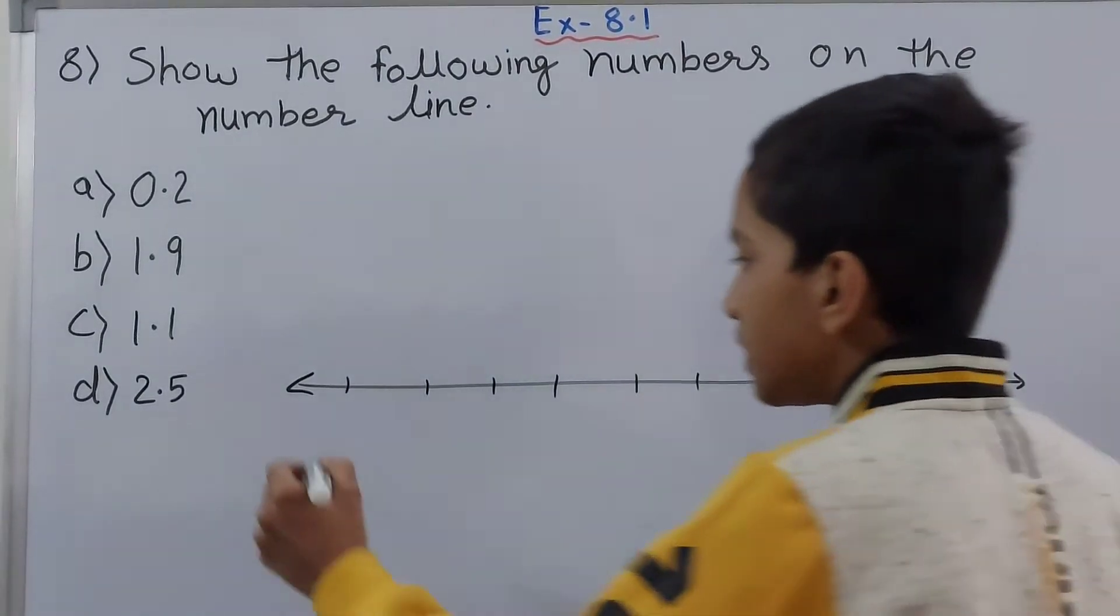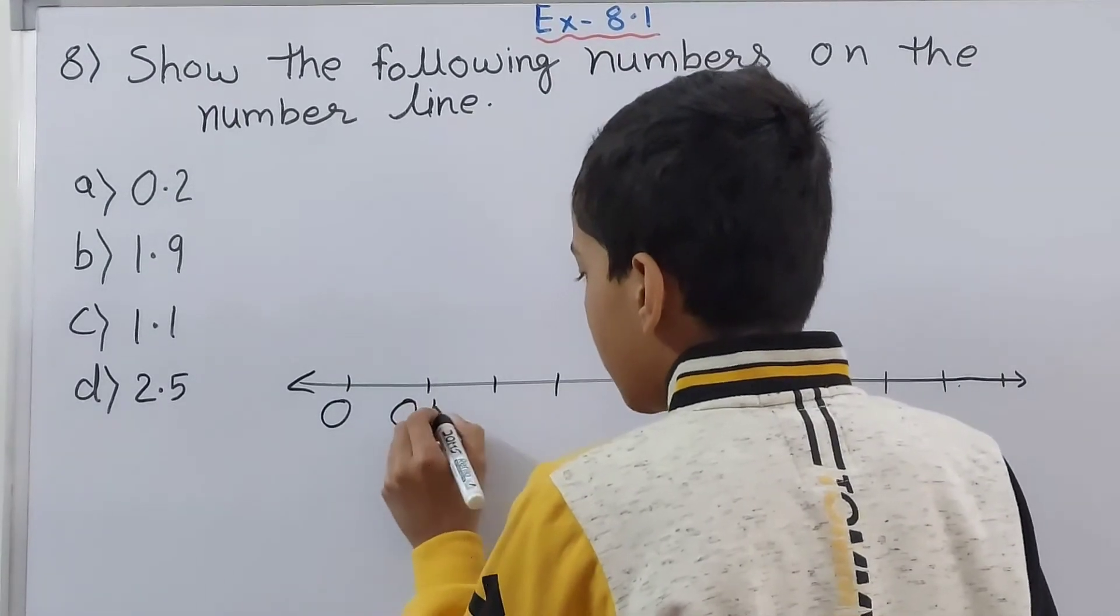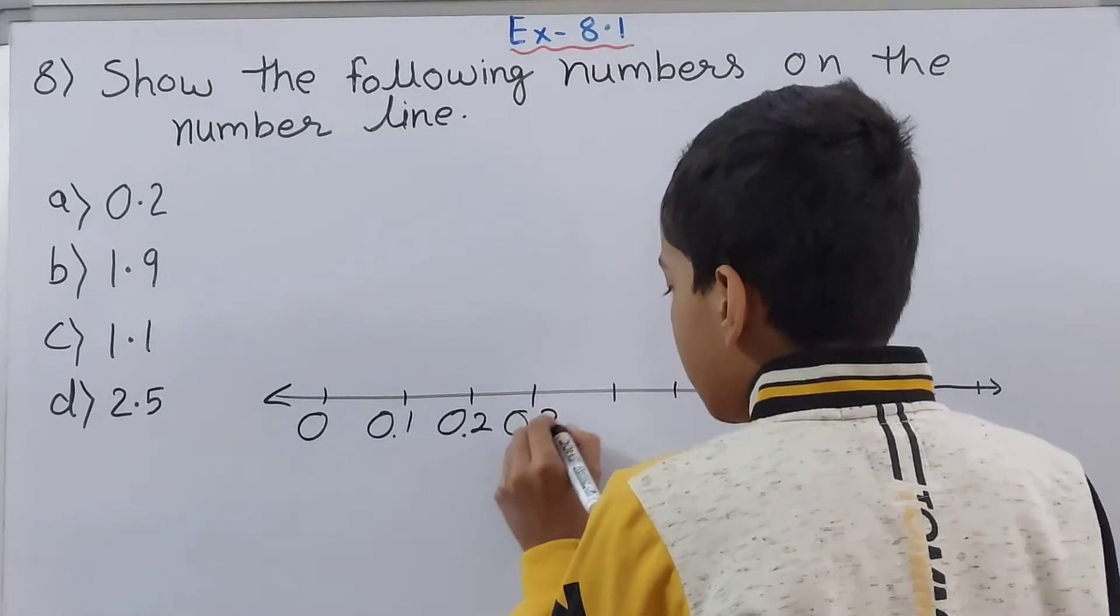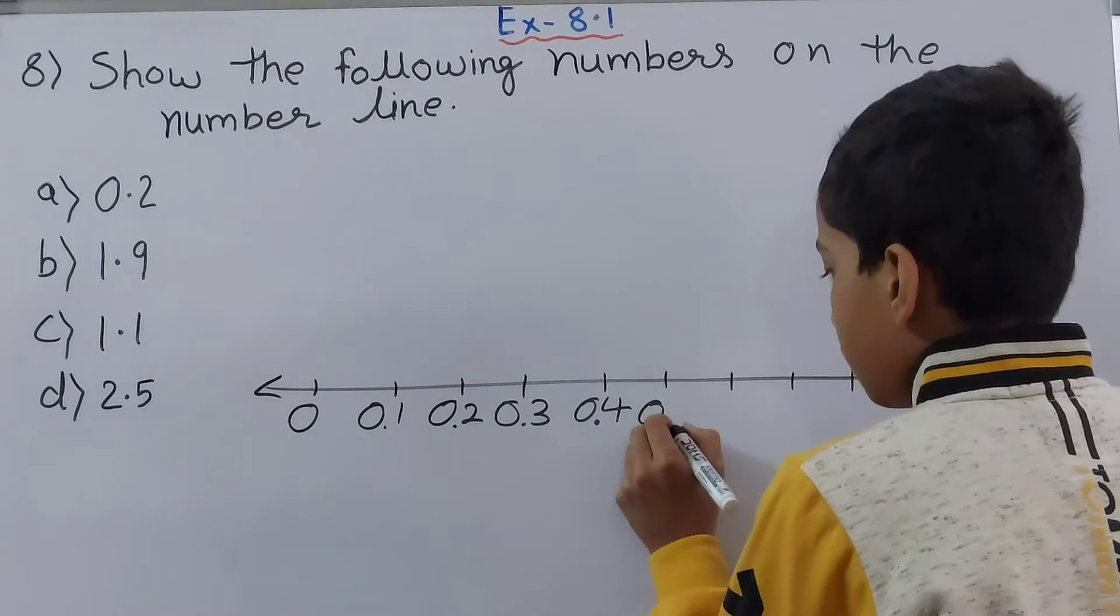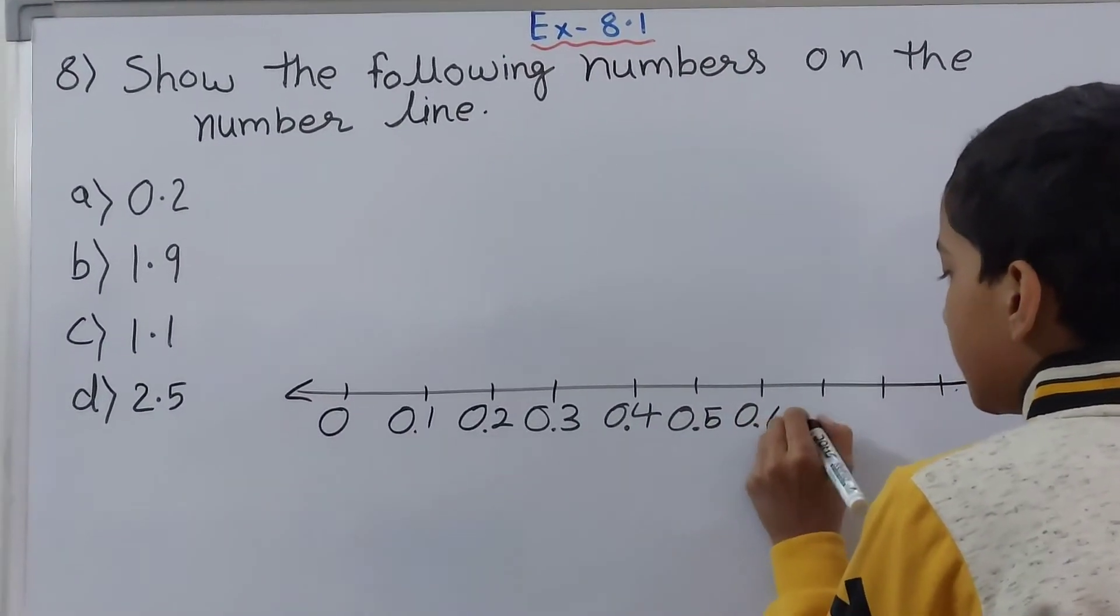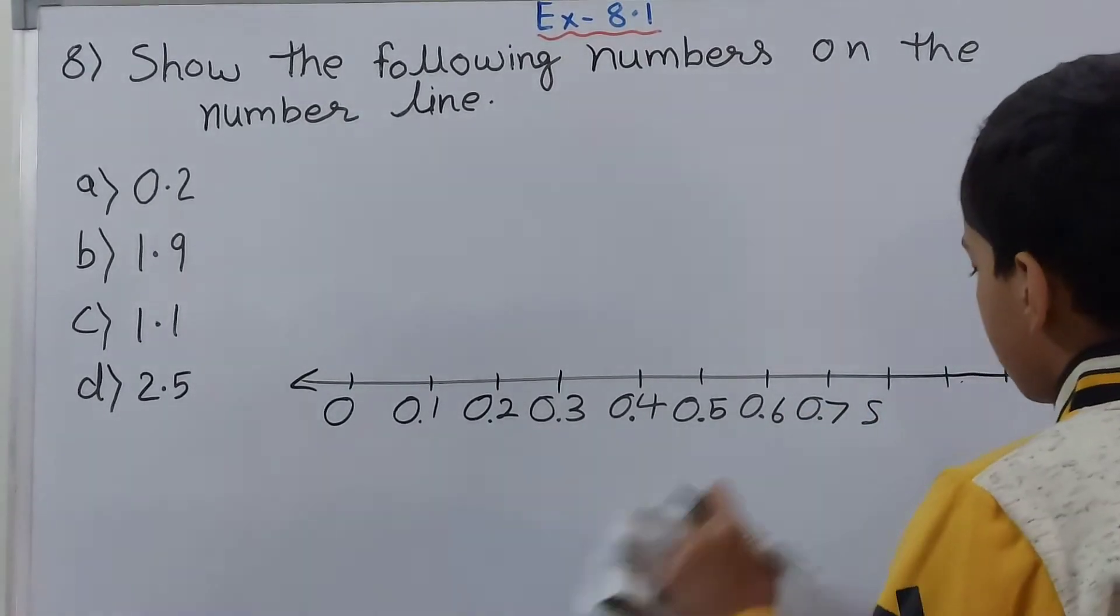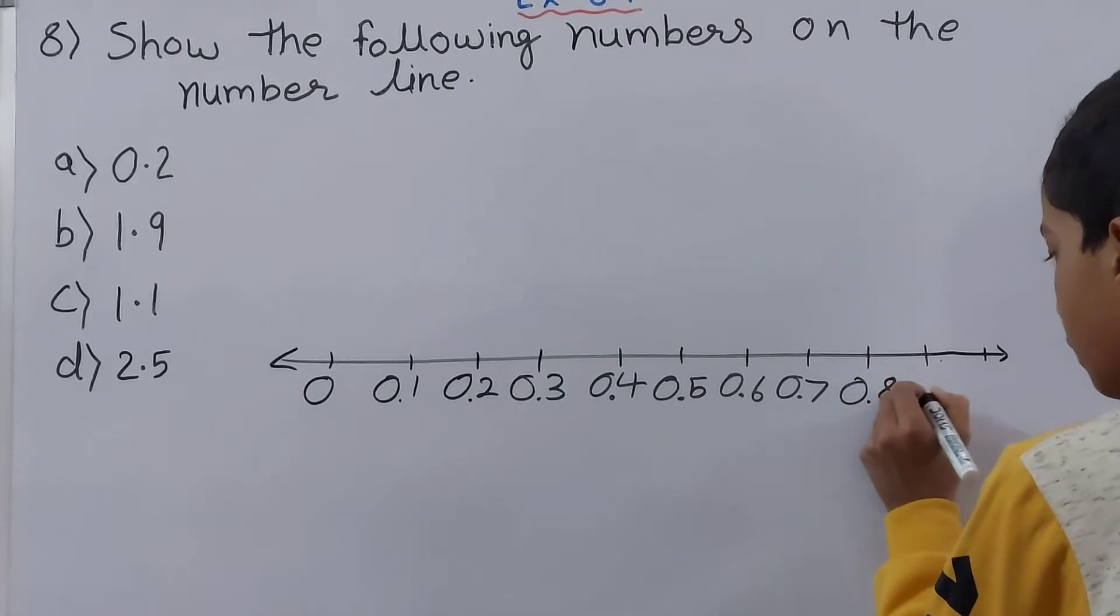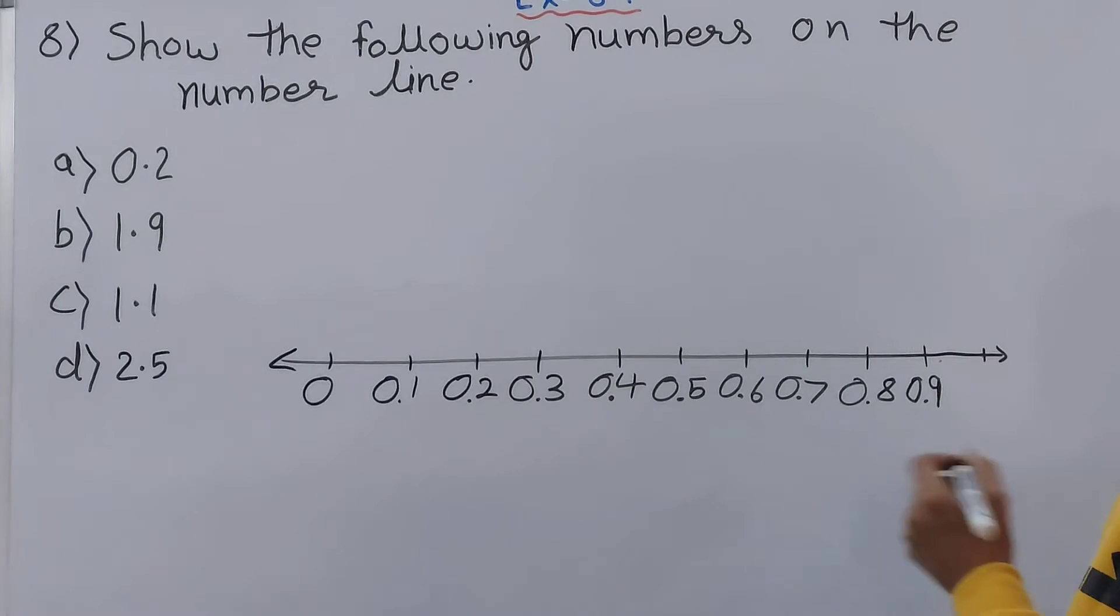Now let's start filling this. We will start from 0. So this becomes 0.1, 0.2, 0.3, 0.4, 0.5, 0.6, 0.7, and this is 0.8, 0.9, and in the last we will put the whole number 1.